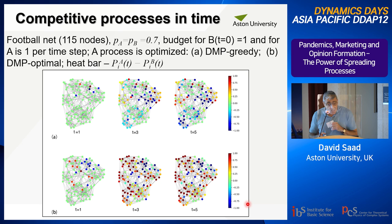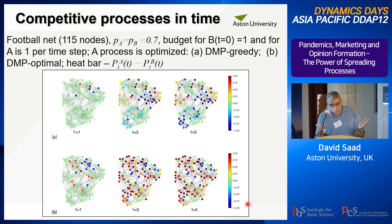A couple of examples. The first is on the football network, a benchmark of college football matches in the US with 150 nodes. In this case we put two processes, P_A and P_B, in place.